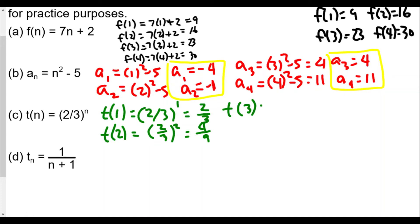t(3), the third term, will be (2/3)³. All we're doing is replacing the n with the term number, so that would be 2³ is 8 and 3³ is 27, so 8/27. Finally, the fourth term t(4) is (2/3)⁴, and we get 16/81. So here are our four terms for c: 2/3, 4/9, 8/27, and 16/81.